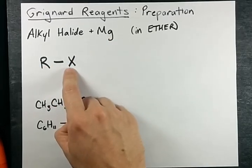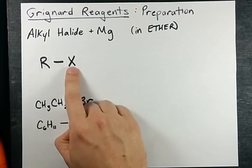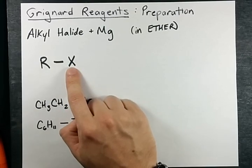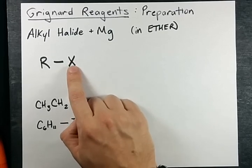This is my alkyl halide - some kind of carbon chain, doesn't matter how long, and a halogen atom connected to it. I've mostly seen this as bromine or iodine, but I'm pretty sure that you can use chlorine and maybe even fluorine.